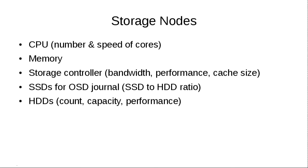For individual storage nodes — these are just Linux boxes with disks in them. You care about CPU number and speed of cores; we tend to recommend one and a half gigahertz of CPU core per OSD. Memory: you want one or two gig per OSD or per terabyte of storage, depending on who you ask. A node with eight disks, give it 16 gig of RAM. Storage controller bandwidth, performance, and cache size. You might be interested in putting SSDs in front of spinning rust OSDs to act as journals for them, and you care about how many disks you're putting in and their capacity and performance.